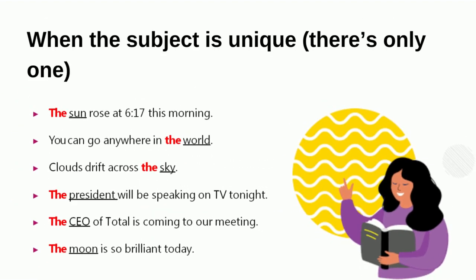When a subject is unique — meaning there is only one of it in the world — we use 'The'. Like 'The sun', because there is only one sun. Similarly, 'The sky', 'The earth', 'The moon'. In the same way, a company's CEO is also only one, so we say 'The CEO'.